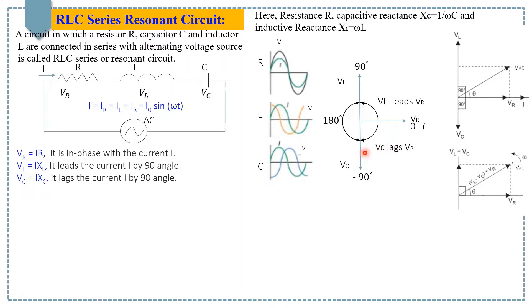Here you can see that the corresponding voltage vectors for each component are drawn in reference to the current vector. Please note that we cannot simply take the algebraic sum of the voltages in the RLC circuit — we need to take a vector sum. Because the voltage is in phase with current in the resistor, we draw the resistor voltage exactly parallel to the reference current.